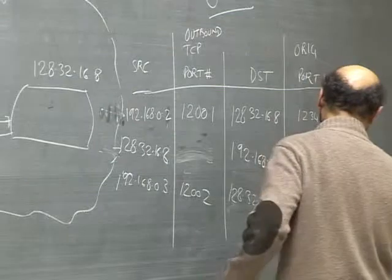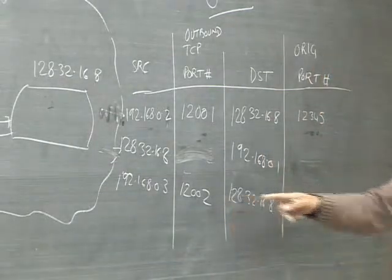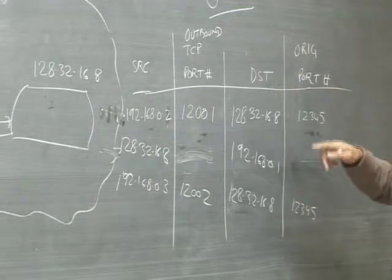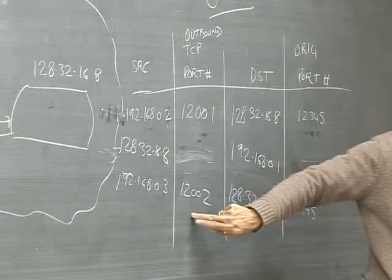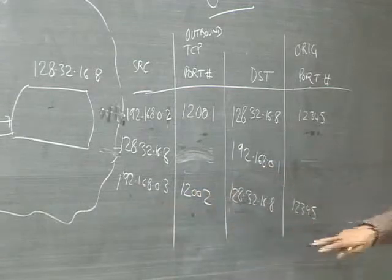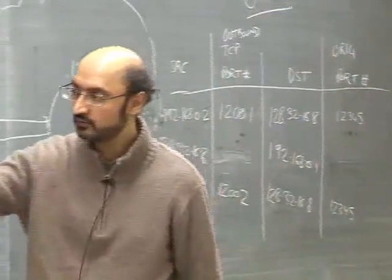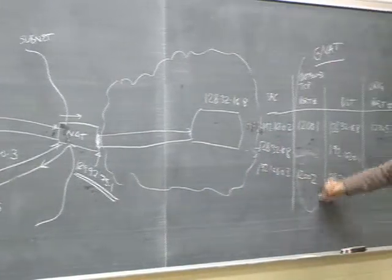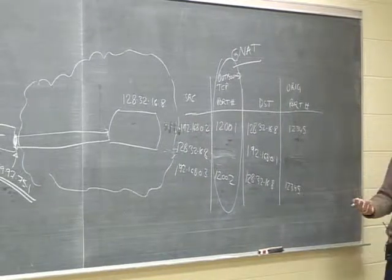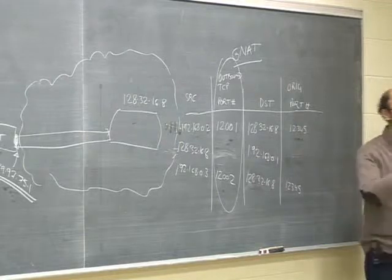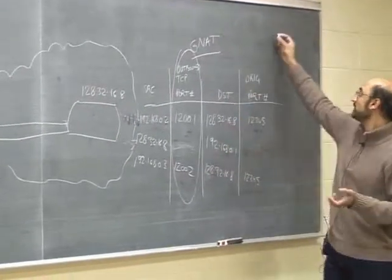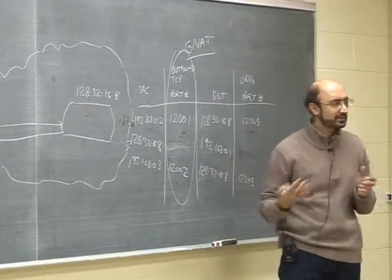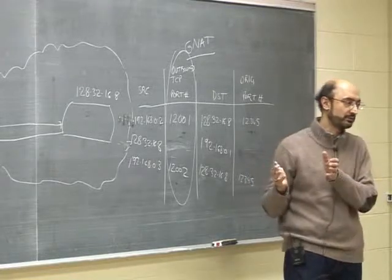The outbound port number in the NAT table is chosen randomly — any unused port is okay. In practice, some NAT gateways use consecutive port numbers starting at 12001, 12002, and so on. The spec doesn't specify which pattern to use; it just has to be unique. The NAT gateway fills in the table row automatically when it examines an outbound TCP packet. When the reply comes back, it uses the row to rewrite the packet header. Note this only works for TCP and IP — UDP requires a separate table.